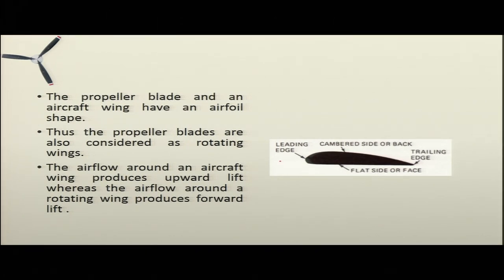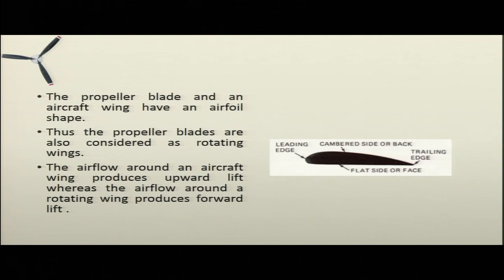The airfoil has a leading edge, a trailing edge, the top is the cambered side or back, and the bottom is the flat side or face. Just like the airfoil section of the wing, the blades also have an airfoil section — that is why they are called rotating wings. The airflow around an aircraft wing produces upward lift, whereas the airflow around a rotating wing produces forward lift.